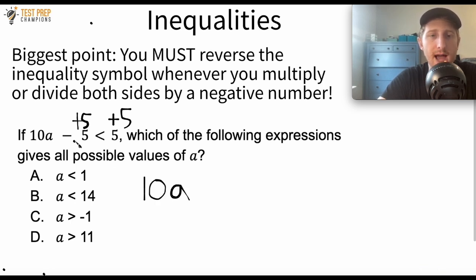So let me rewrite. If I add 5 to both sides, I'm going to have 10A is less than 10. Now again, we started off with 10A minus 5 is less than 5, and the name of the game is to get the A by itself. So what I did was I added 5 to both sides. The 5s cancel out on the left-hand side, and 5 plus 5 on the right-hand side gives us 10. So we have 10A is less than 10.